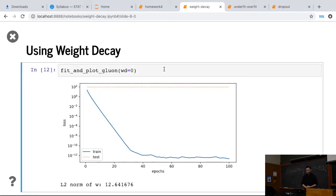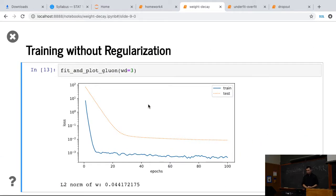Then, similar thing, using weight decay equal to zero, you see a big gap between test accuracy and training accuracy. And then, if you apply weight decay equal to three, you also see the drops, the test accuracy drops. So also, the L2 norm of W decreases as well.